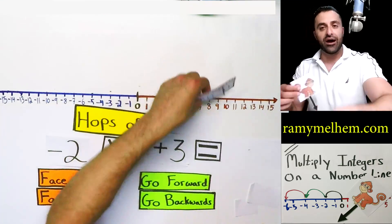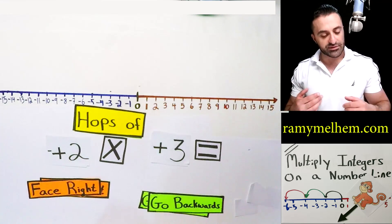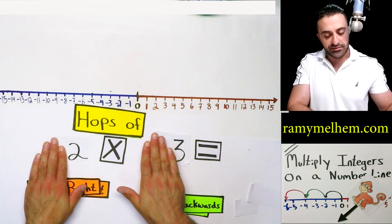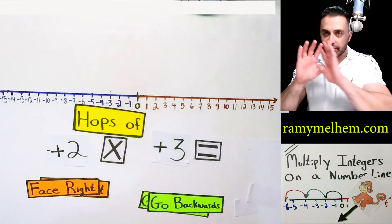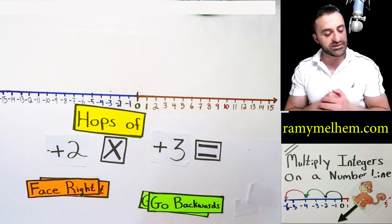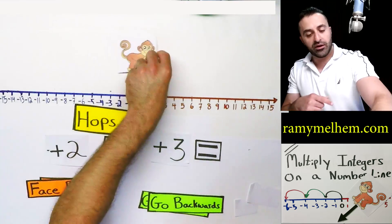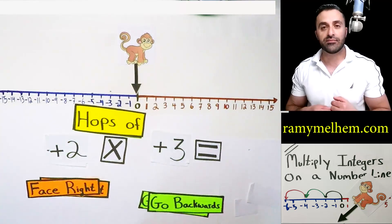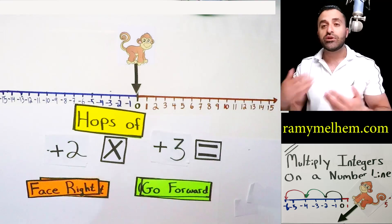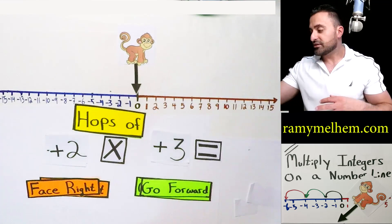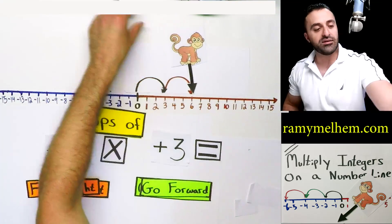Let's get some practice down. Let's go with two positive numbers — positive two times positive three. Two hops of three. We know he's got to hop two times with three numbers under each hop. The first symbol tells him to face the right direction — it's a positive, so we're going to throw him on the zero facing right. The second tells him to go forwards because it's a positive. So now he knows he's got to jump two hops of three. It looks like hop, hop, and you get positive six.